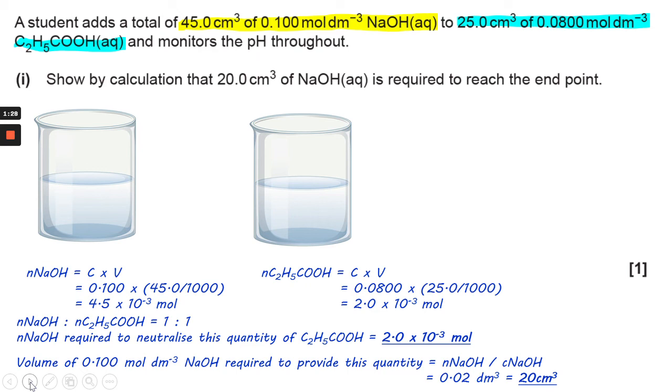So the volume of the 0.1 mole per decimeter cubed sodium hydroxide required to provide that quantity is N over C, so moles over concentration, which gives us 0.02 decimeter cubed equals 20 cm cubed.